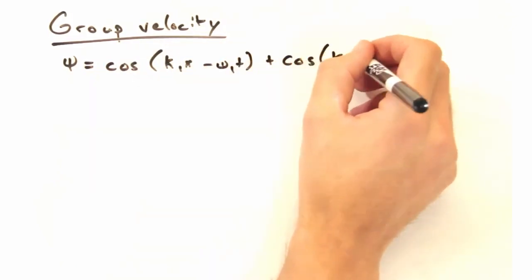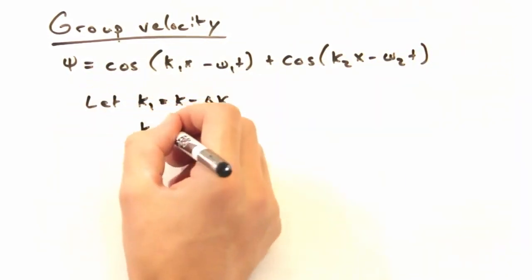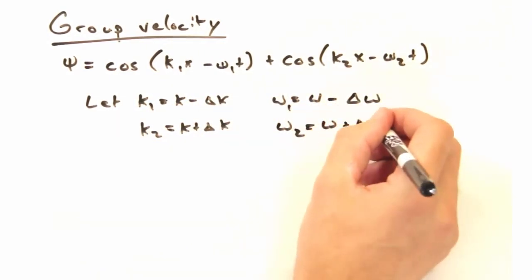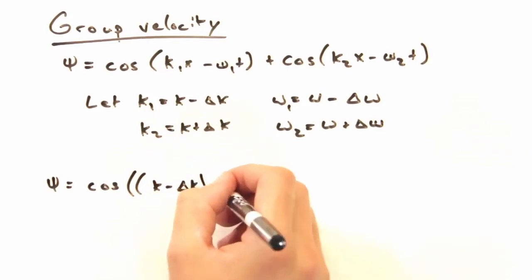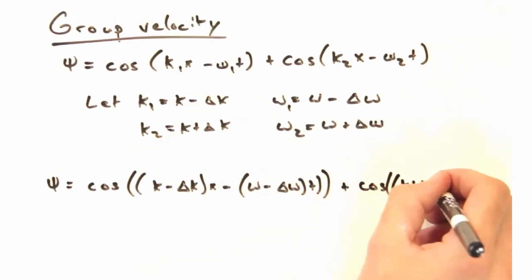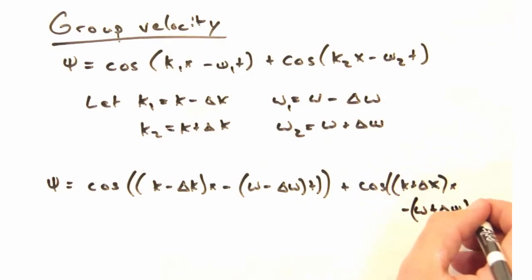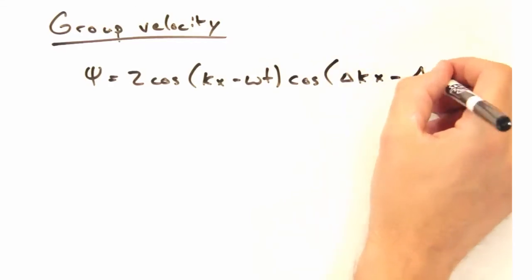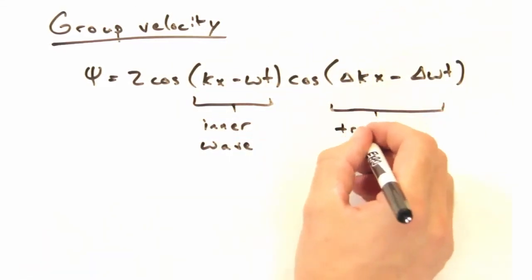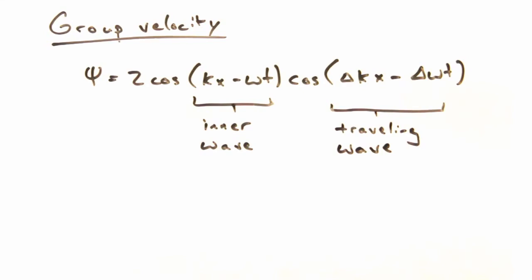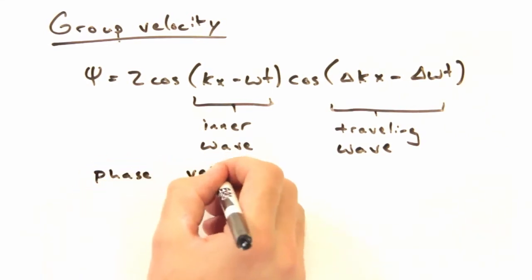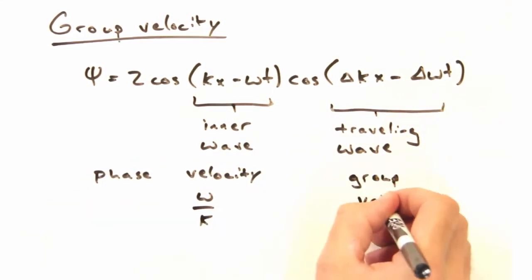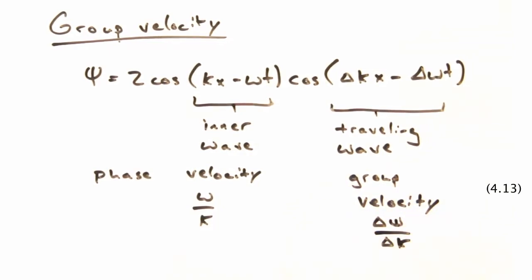What about the group velocity then — isn't that also the amount of distance over time? Almost. We can think of our waves in terms of phase and group velocities. Consider adding together two waves in the following form. Now if we define our k1, k2, and omega 1, omega 2 variables as so, we can plug these back in. Through the magic of trig, we can rewrite these two equations in the following form, where this term describes the inner wave and this term describes the traveling wave packet. The phase velocity corresponds to the omega over k term, and so this other term corresponds to the group velocity.